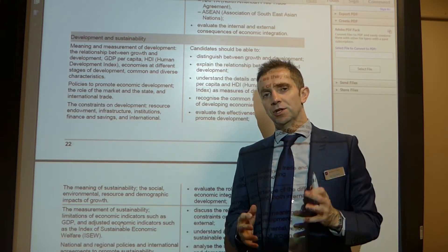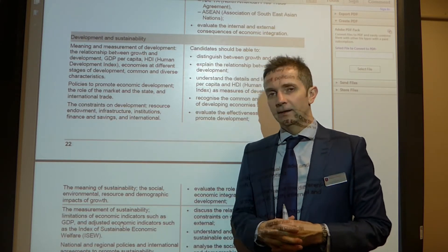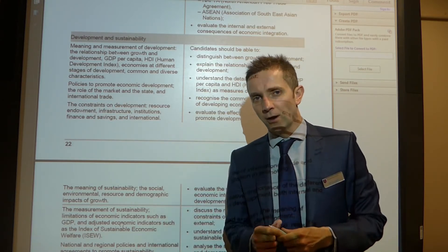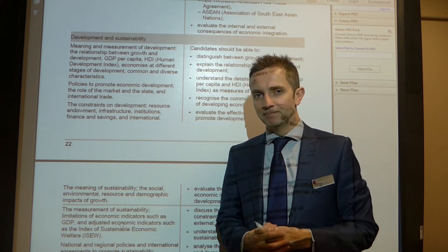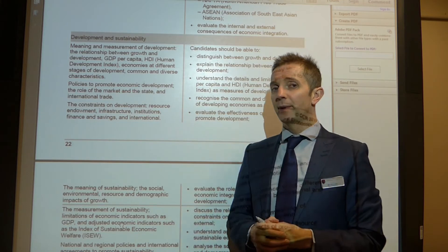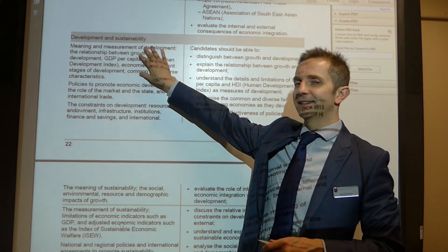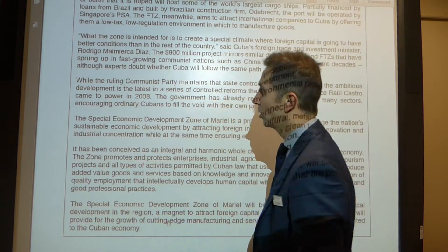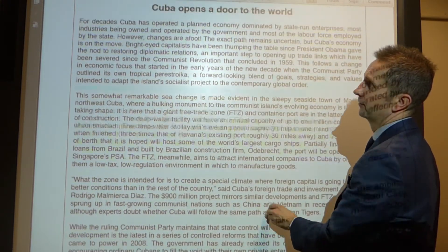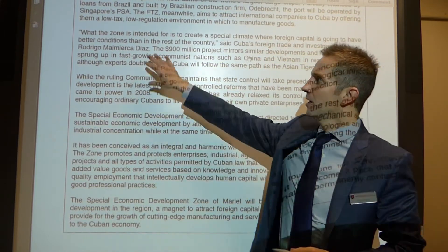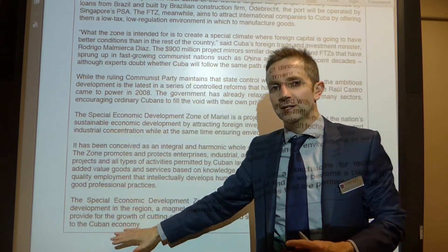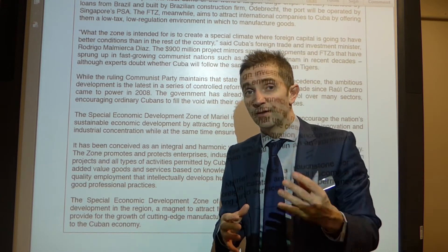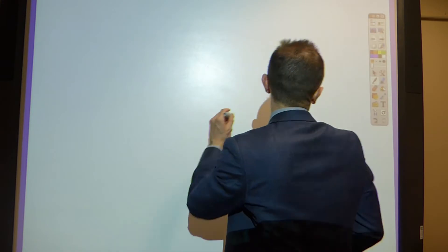Good morning subscribers. GKonomics here bringing you, hopefully barring any interruptions, hopefully the remaining consideration of extract 4 for F585 June 2017. If you've watched video 1 on paragraphs 1 and 2, you will recall that we were looking at this area of the specification: development and sustainability. We had got to the second paragraph, so I'm going to pick this up and go through hopefully to the end, and then present you with what I think the likely question will be in your exam in June.